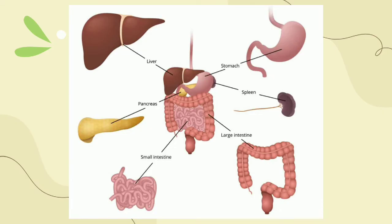Now let's check your answers. We have here the different parts that make up the digestive system. First, we have the liver, next is the pancreas, then the small intestine, followed by the large intestine, the spleen, and the stomach. We are going to discuss the function of each as we go along with our discussion.